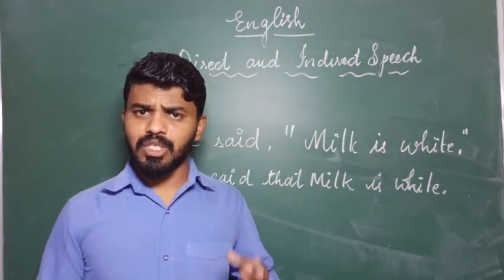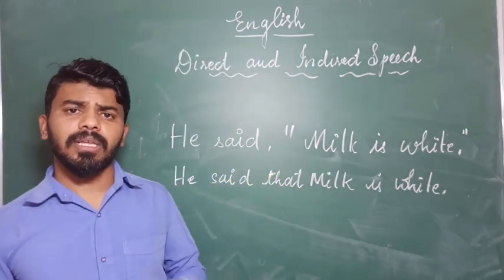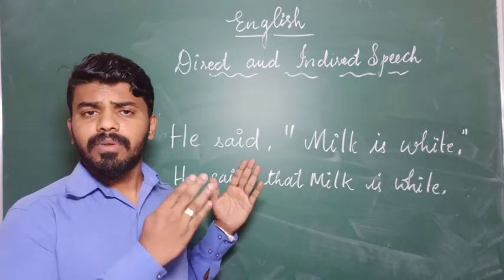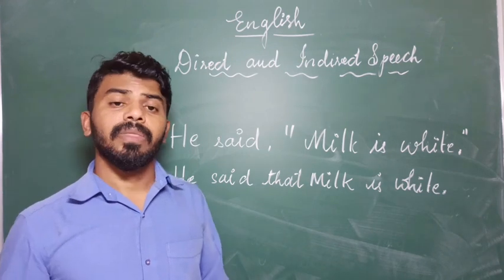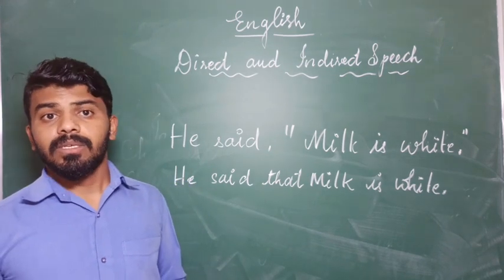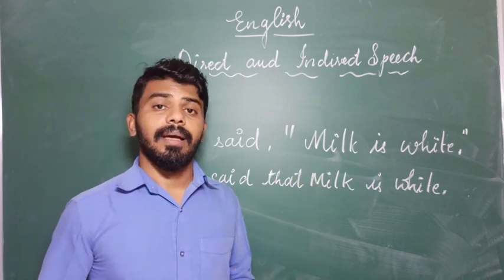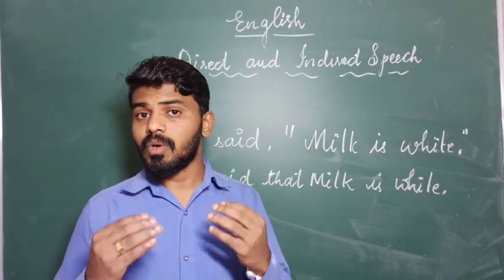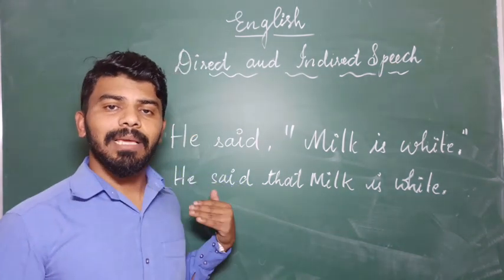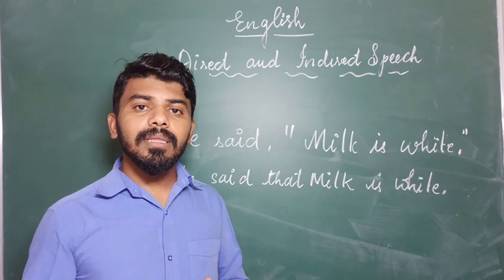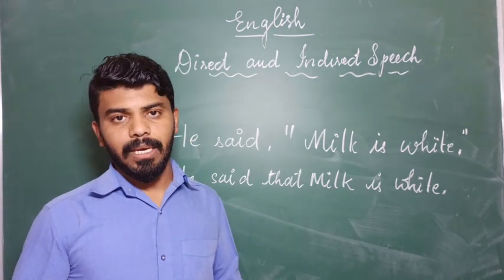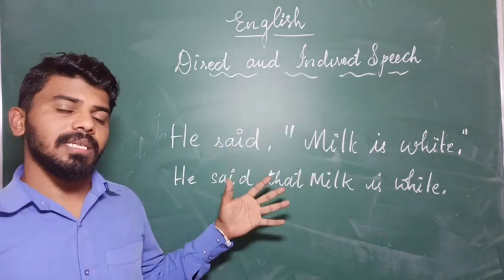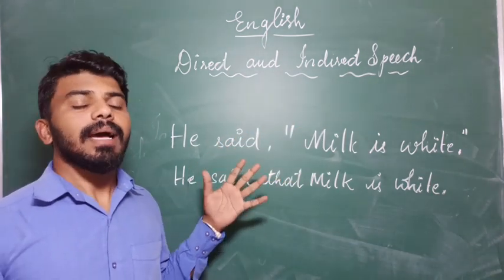So far we have discussed the changes and the conditions we need to keep in mind whenever we convert a sentence from direct to indirect speech. Now let us go sentence-wise. As I discussed in the previous class, there are four types of sentences. All the things I have said so far fall under assertive sentences. Let us now go for interrogative sentences.